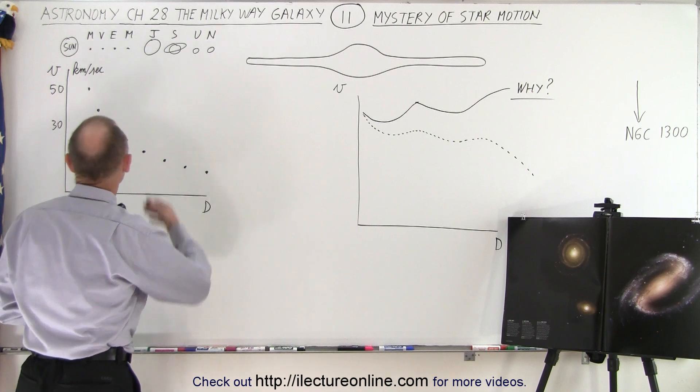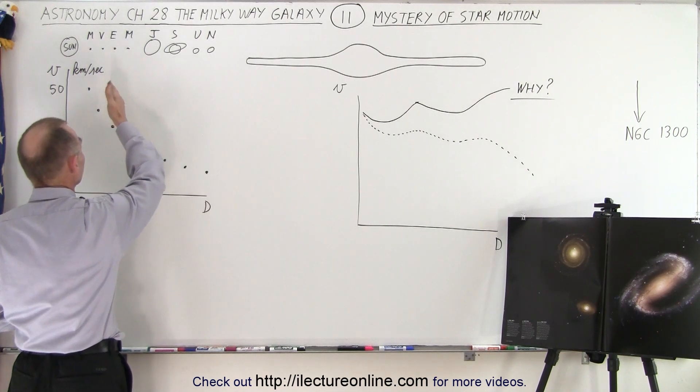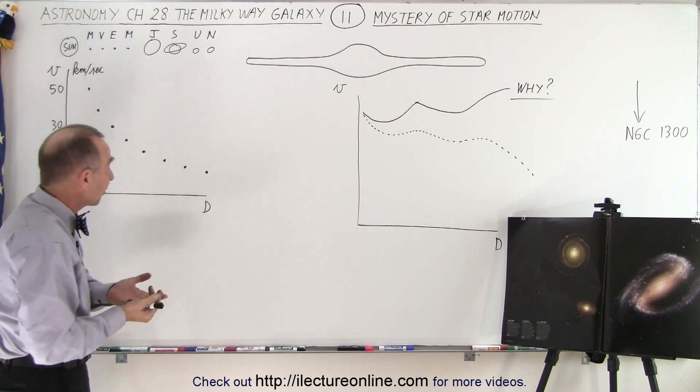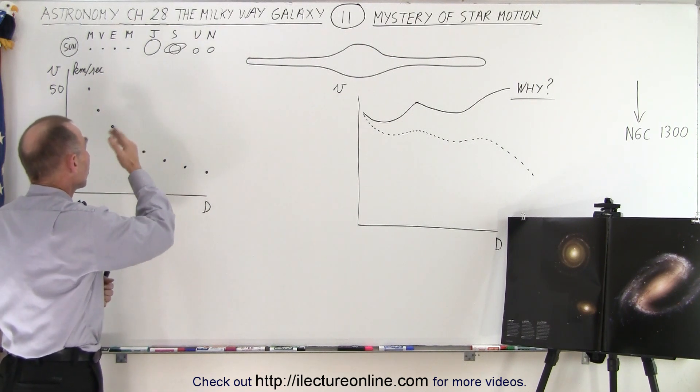Let's go to our own solar system where we have the sun and the eight planets - the four inner planets and the four gas planets. According to laws of physics, we expect that the farther out you go, the slower the planet should be moving.